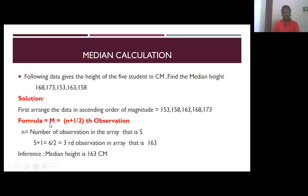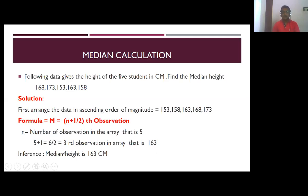The formula for median is the (n+1)/2 th observation, where n is the number of observations in the array, that is 5. So (5+1)/2 = 6/2 = 3. So the third observation in the array. Counting: 1, 2, 3 — the third observation is 163. So the median height is 163.